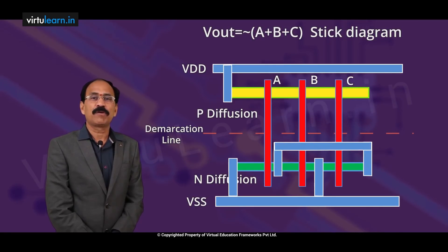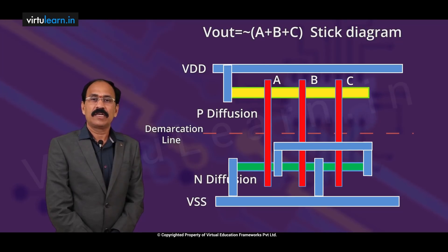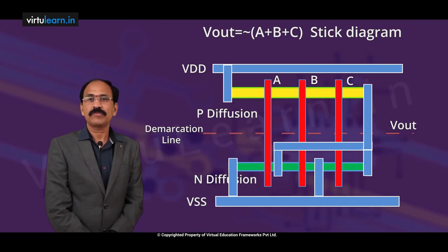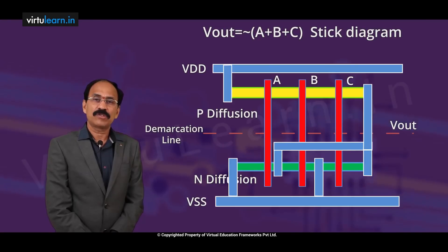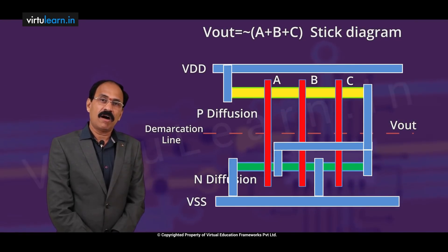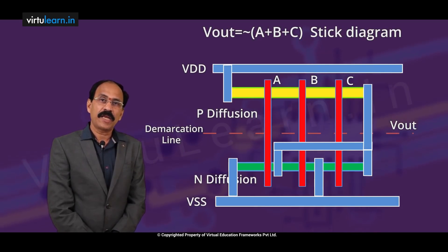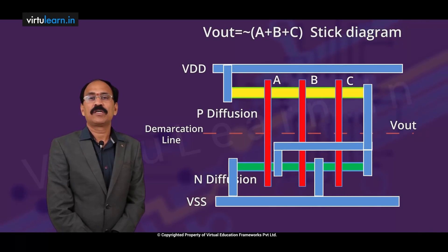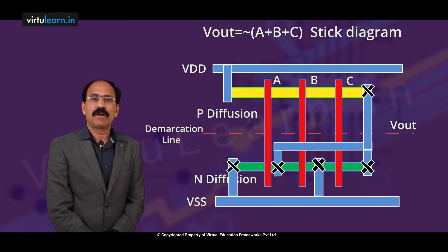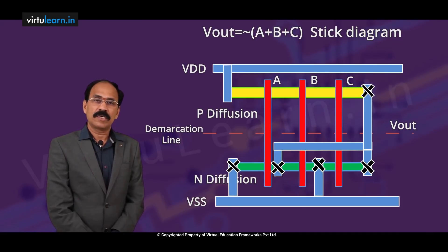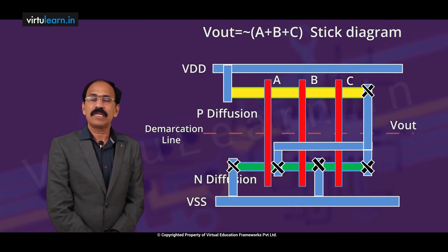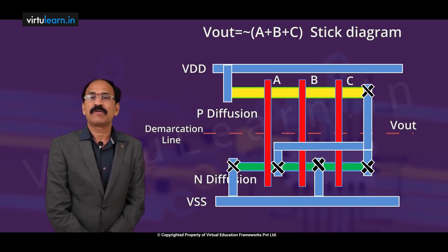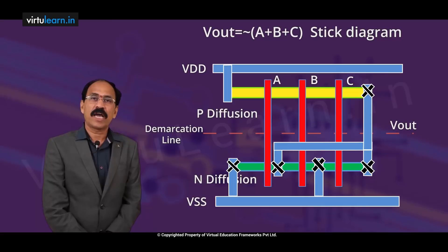Then inputs and outputs we have to take. All sources of all the transistors have to be connected and grounded. All drains of N-MOS transistors and drains of bottom P-MOS transistors have to be connected, which is connected to the output. Contact cuts have to be made: one from ground to N-plus diffusion, one metal to another metal, and then output to P-plus diffusion and output to N-plus diffusion. That's how we make a stick diagram for any circuit.